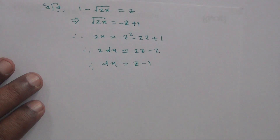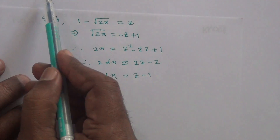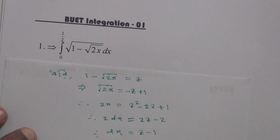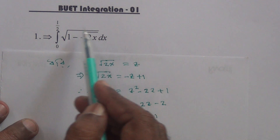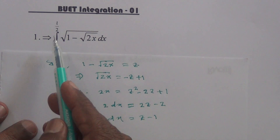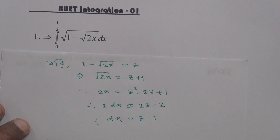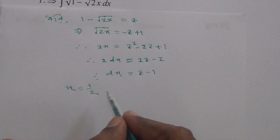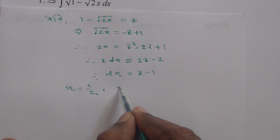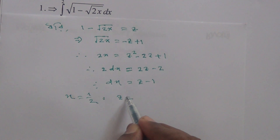So we have to look at dx. Now we need to look at dx, where dx equals z minus 1. Now we have to look at the upper limit and lower limit. The upper limit is x, and the upper limit is 1.